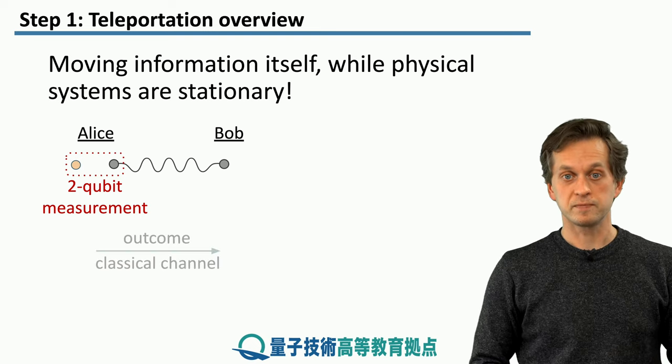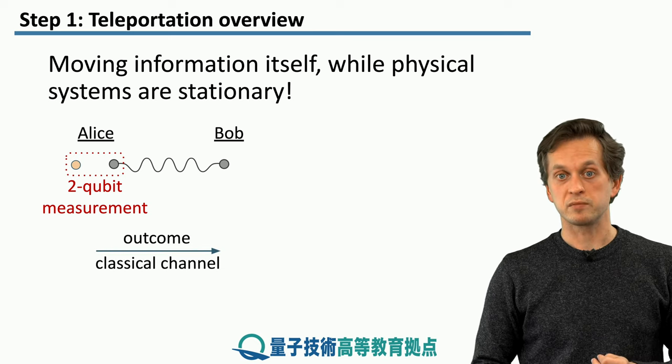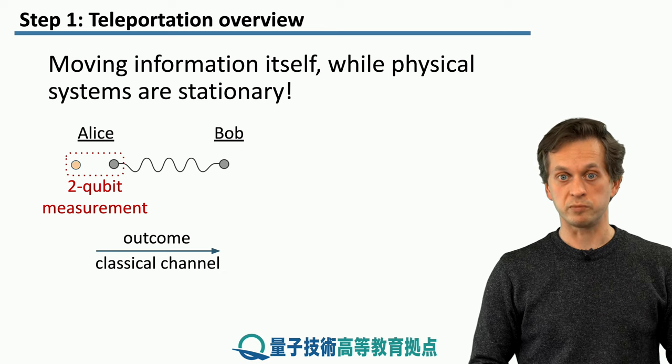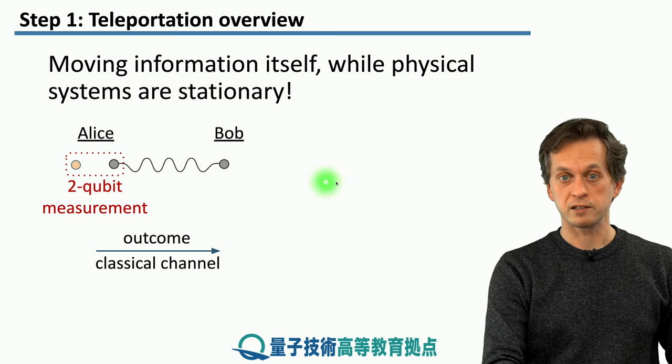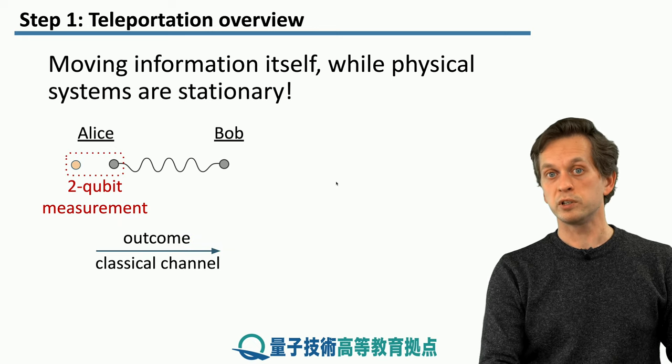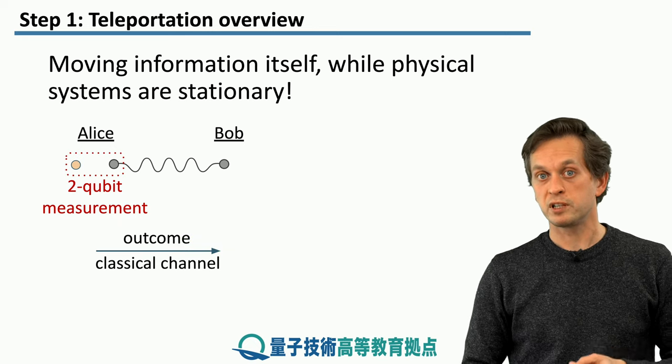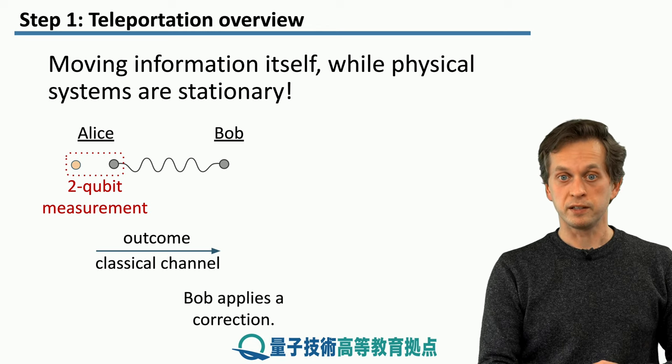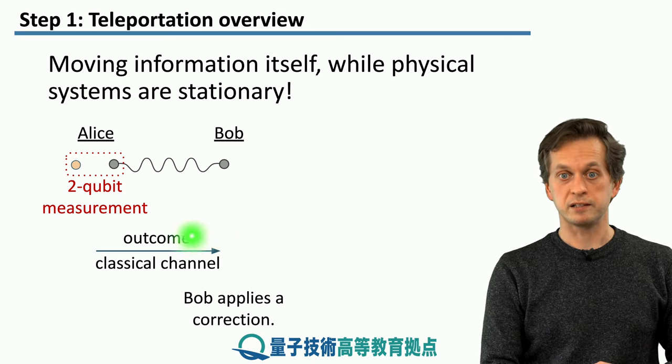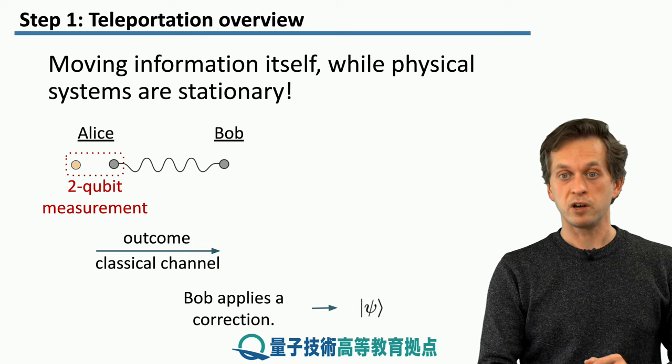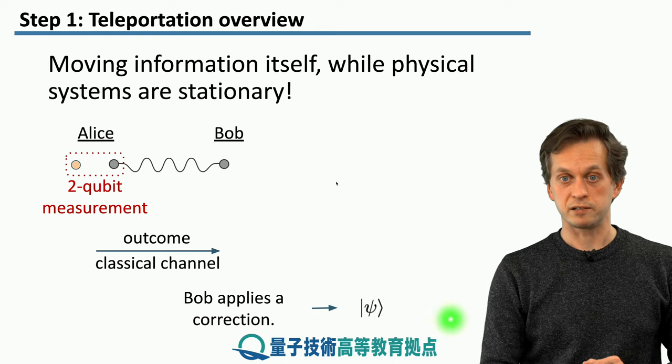What that does is it provides her with two classical bits. Because the measurement is on two qubits, it means there are four possible outcomes. She then communicates this outcome by a classical channel, and she can do it because the outcome is represented by two classical bits. Bob then receives this classical message, applies some local corrections, and he ends up with the desired state psi.